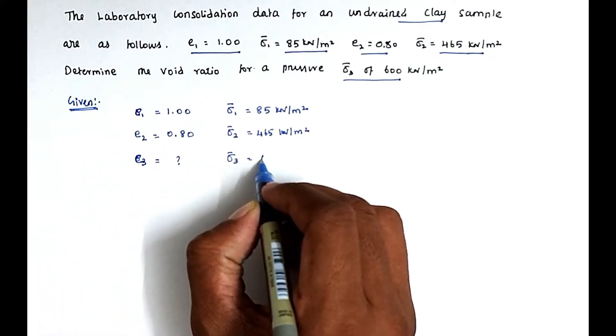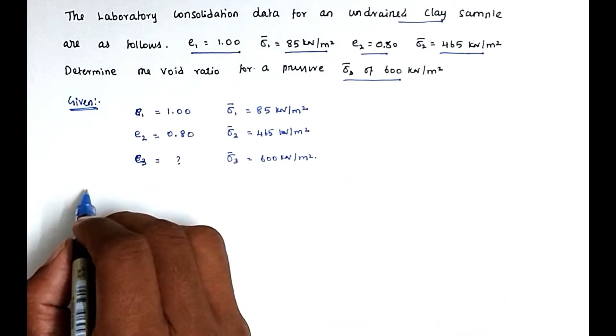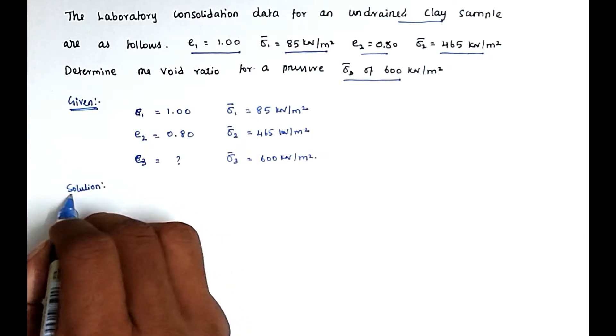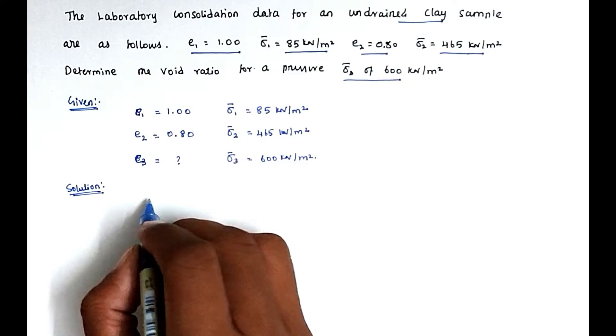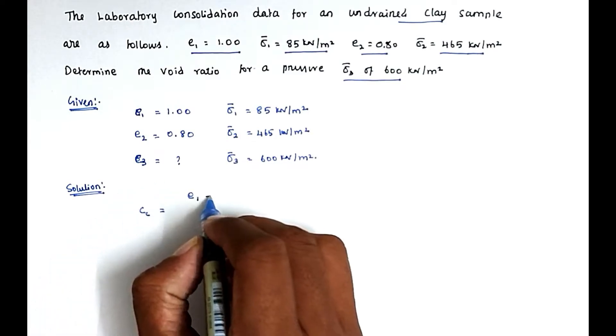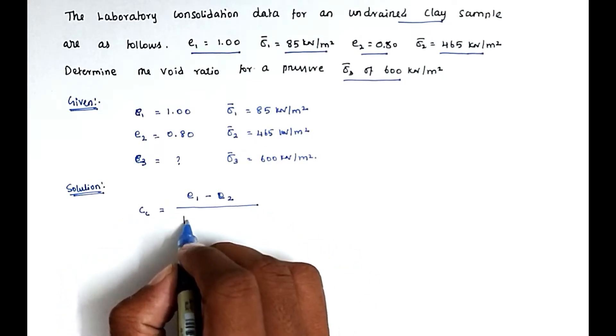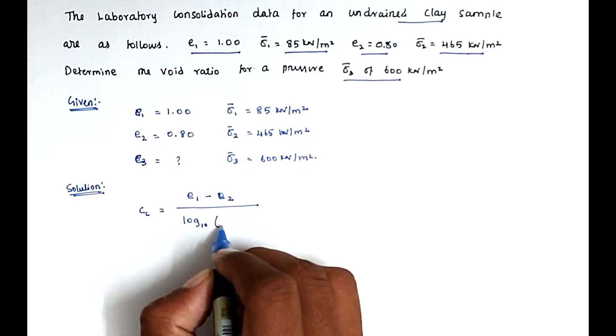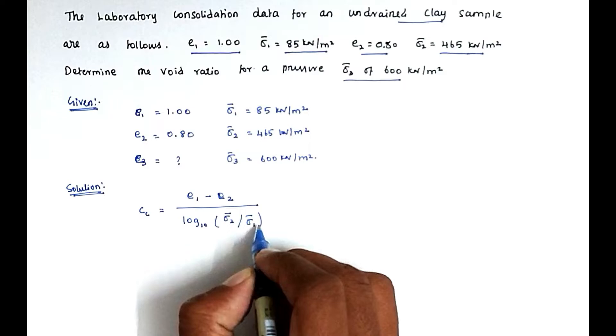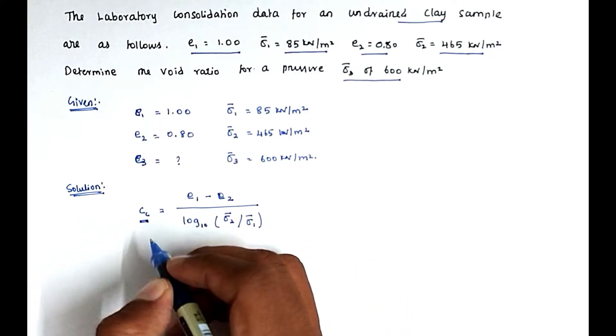Okay, so the solution. For the solution, we know the formula: cc equal to e1 minus e2 divided by log 10 sigma 2 dash divided by sigma 1 dash. From that we have to find out the cc value.